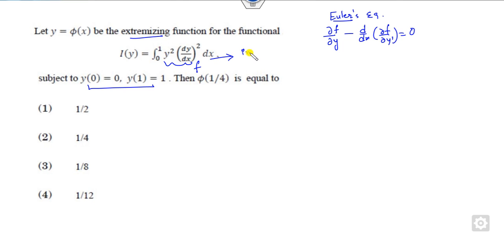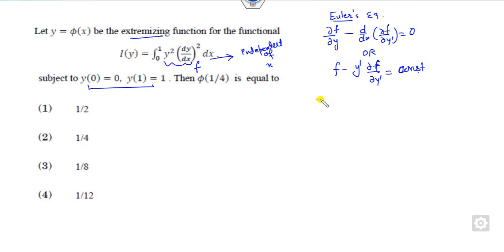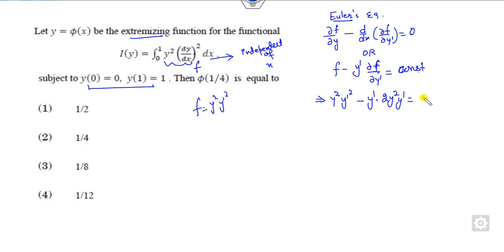You can see that this equation is independent of x. So whenever f is independent of x, you can use the shortcut form: f minus y-dash times the partial derivative of f with respect to y-dash equals a constant. Now, this is a constant, this is 0, and this is constant. You can substitute this value. This is y-squared times y-dash squared minus y-dash. What is the partial derivative of this with respect to y-dash? This is nothing but 2y² y-dash, which is constant c.